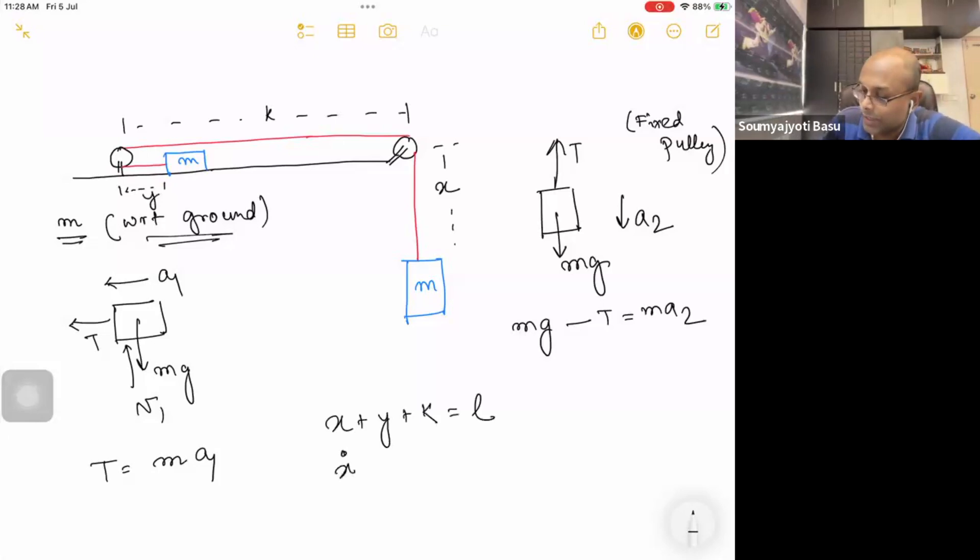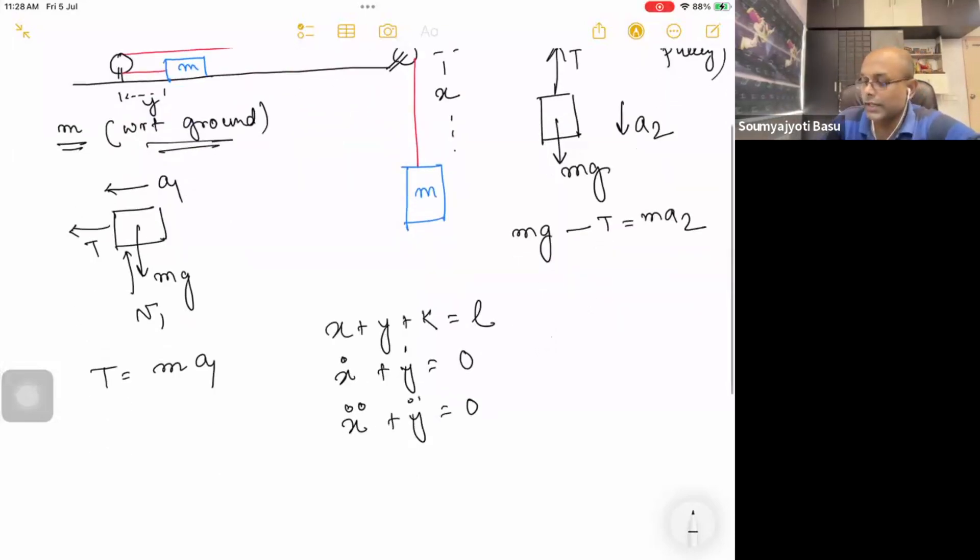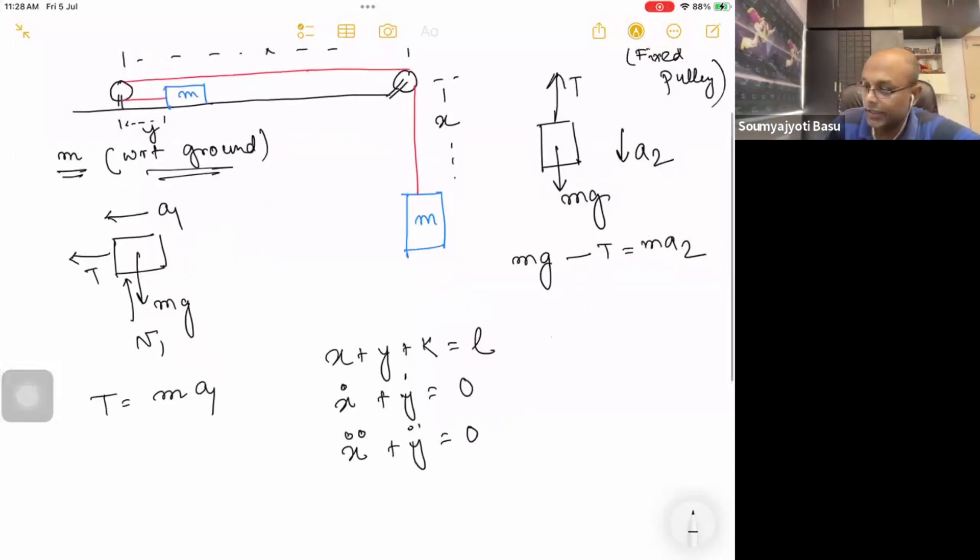First we differentiate: x dot plus y dot equals 0. Differentiate again: x double dot plus y double dot equals 0. x double dot is a2, y double dot is a1. Therefore, mod of a1 is equal to mod of a2. Magnitude is the same.